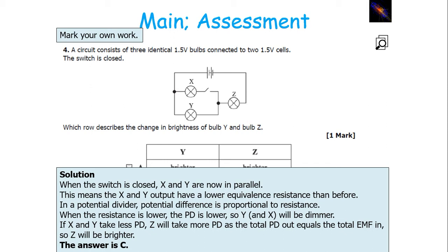In a potential divider, the total EMF in equals the total PD out. So if X and Y have a lower PD than previously, Z will have to have a higher PD, because the total PD in will equal the total EMF into the circuit. Therefore Z will be brighter.